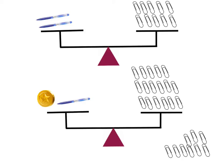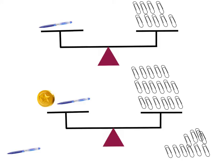So what we'll do is we'll say two pens is equal to ten paperclips. So we can take half off of one side — I'm going to take off one pen, half, and I'm going to take off half of the paperclips, so I'm going to take off five. Now we know that one pen is equal to five paperclips.